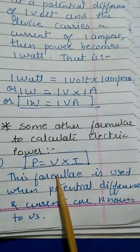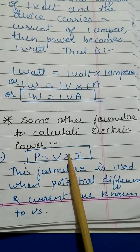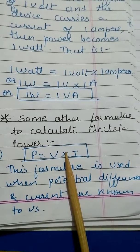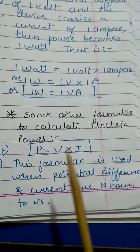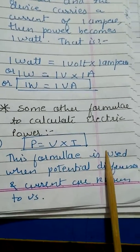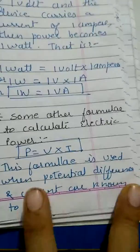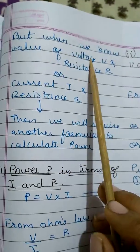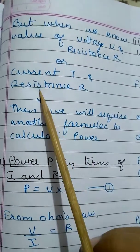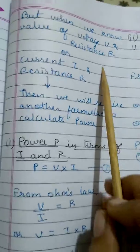Now let us understand some other formulas to calculate electric power. We will use P equals V×I when we have the value of potential difference and current. But when we know the value of voltage and resistance, or when we are given the value of current and resistance, then we need to derive another formula.